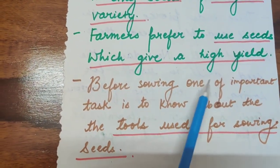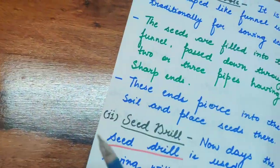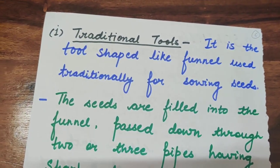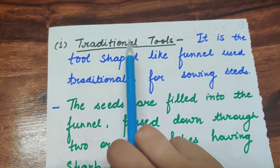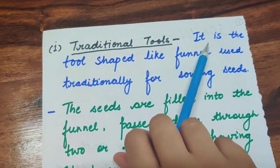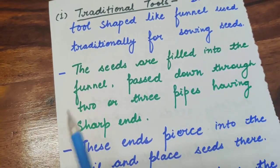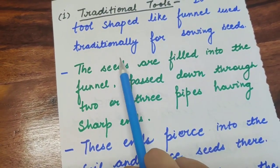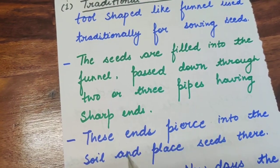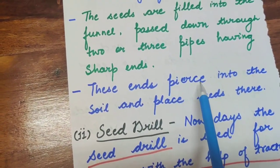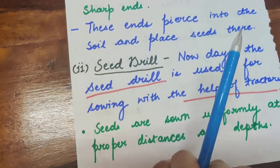Before sowing, it is important to know the tools used. The traditional tool is shaped like a funnel. Seeds are filled into the funnel and pass down through two or three pipes with sharp ends. These sharp ends pierce holes into the soil and place the seeds there.